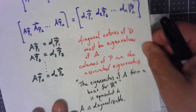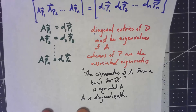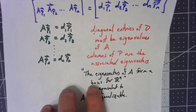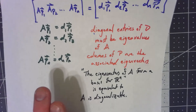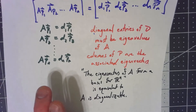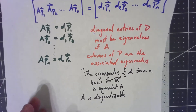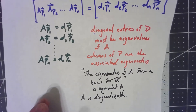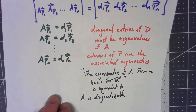In practice, what we're basically going to do is try to find those eigenvectors and find that basis. If we can find it, then A is diagonalizable, and if we can't, A is not diagonalizable. Let's go through an example of this in the next video.